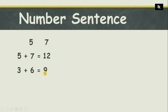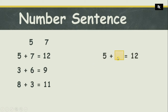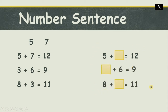Let's move to the next number sentence. Here I have three plus six that is equal to nine. Next I have eight plus three that is equal to eleven. But what happened if a number from these number sentences suddenly disappeared? Here I have removed a number from each of these number sentences.